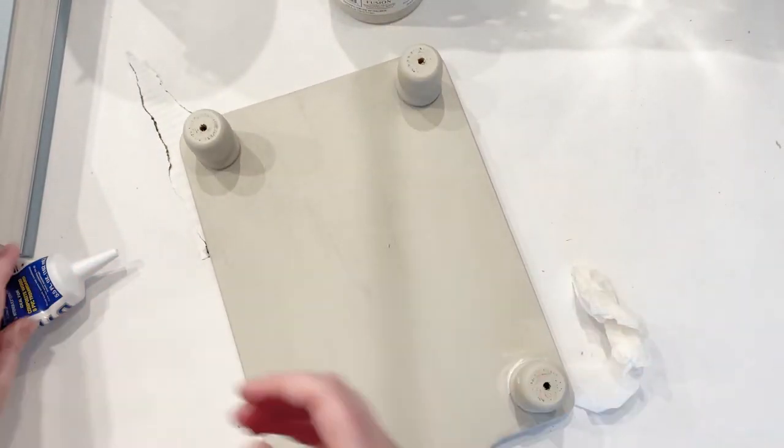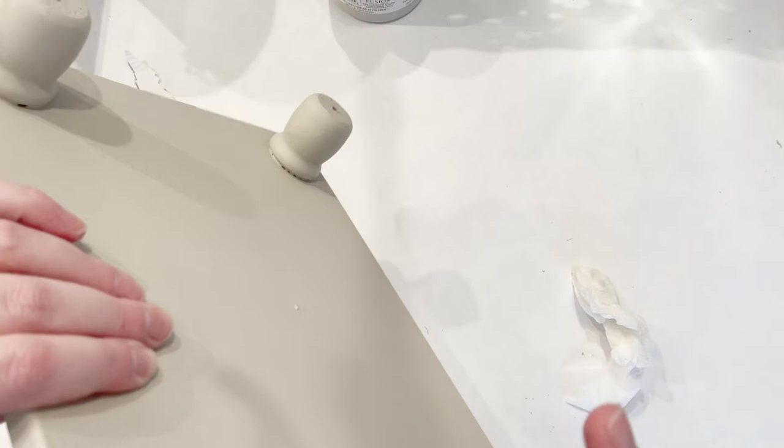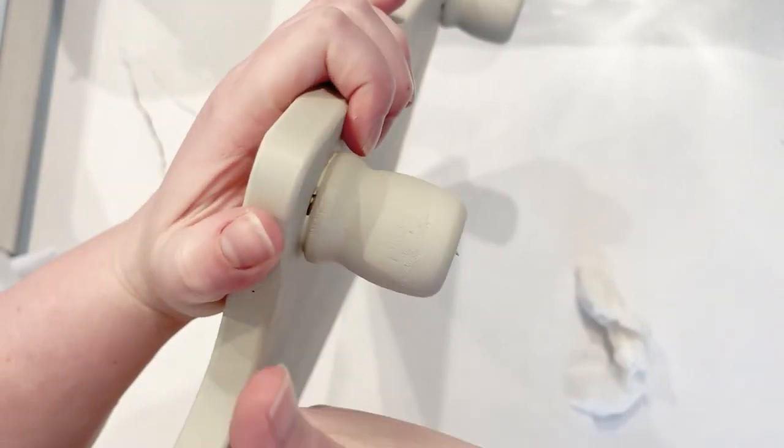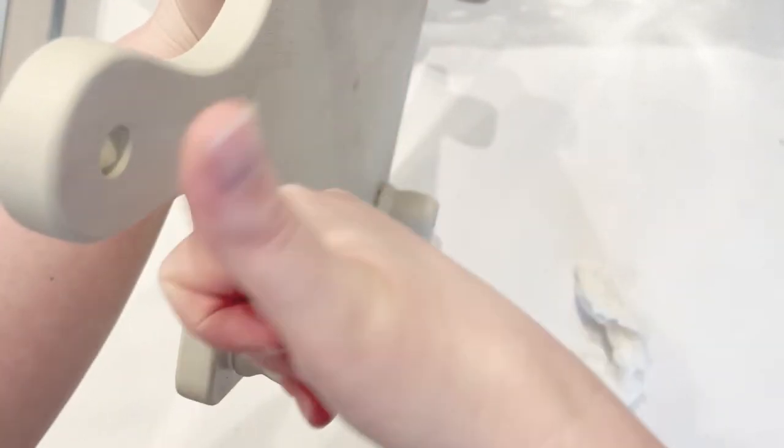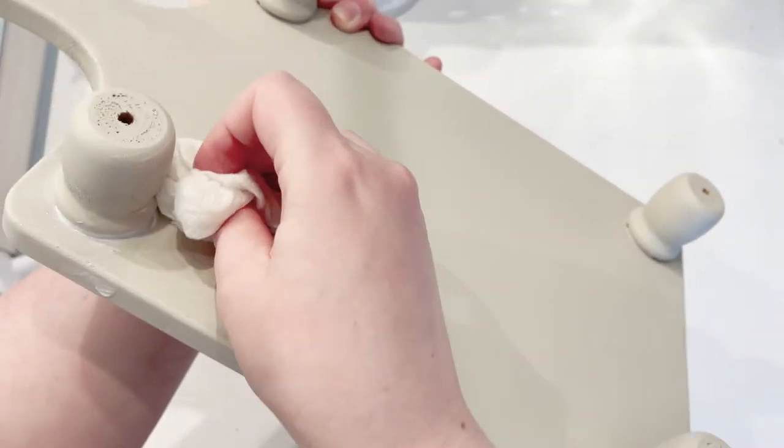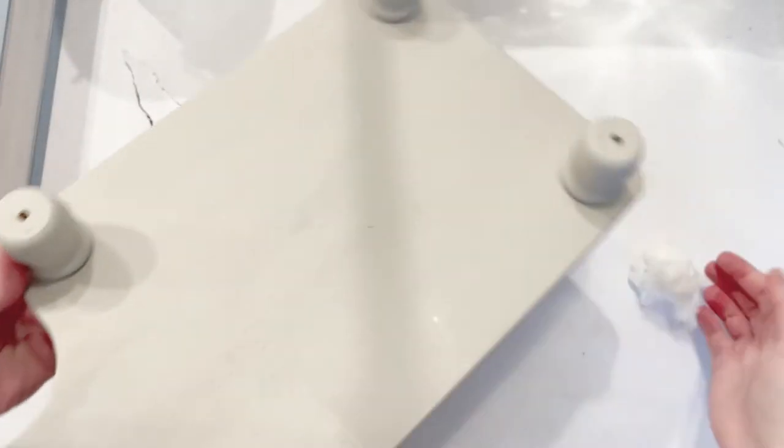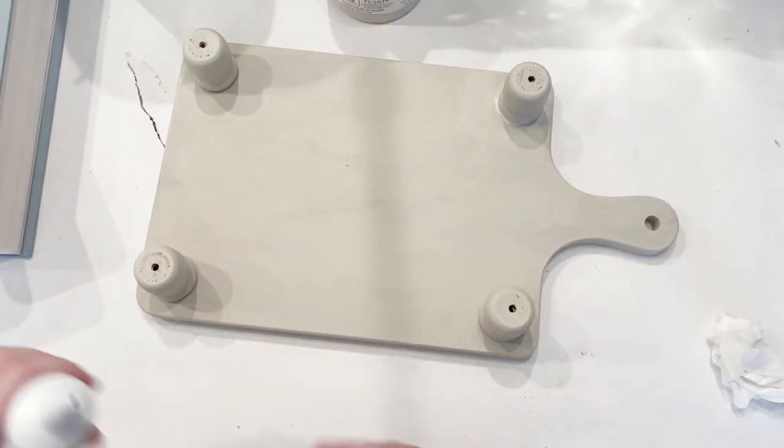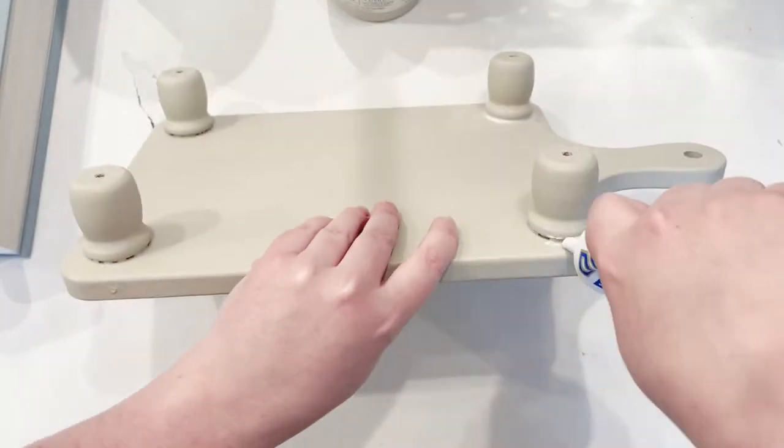You saw that I used wood glue to attach my little legs. You could use E6000 if you wanted to. I've never had any problems with little legs falling off and I've made several of these, so I think the wood glue works perfect. But if you were planning on really jostling it around, you could use the E6000 to keep it a little bit more secure.